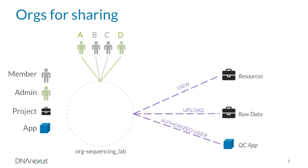Orgs also make it easy for org admins to revoke user permissions to shared data and apps. Say user C leaves the lab and should no longer have access to lab projects and apps — the org admin can simply remove her from the org. Now only users A, B, and D have access to the two shared projects and the shared app. User C has been removed from all projects and apps shared with the org.